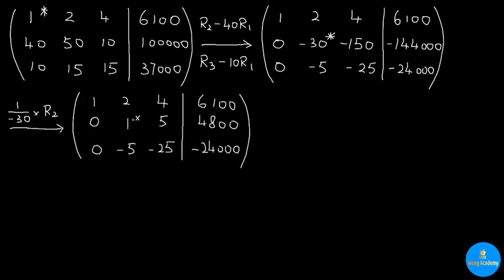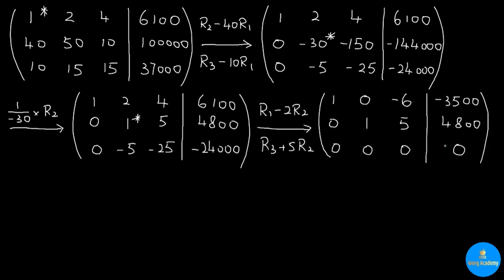We continue to pivot at this entry by eliminating the entries in the same column and turn them into 0. At this stage, you can see that we have already obtained the reduced row echelon form. Therefore, our Gauss-Jordan elimination process has finished. Our next step is to write down the solutions provided by the reduced row echelon form.